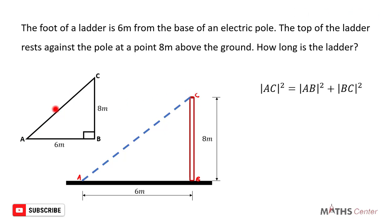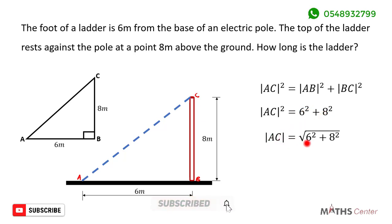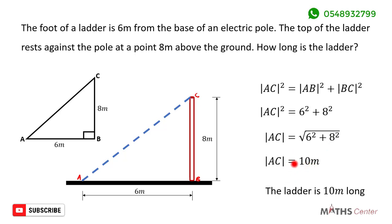So we can easily use the Pythagorean theorem to find the length of AC, which would be the hypotenuse or the longest side. Applying the Pythagorean theorem: AC squared is equal to AB squared plus BC squared. AB is 6 meters and BC is 8 meters, so AC squared equals 6 squared plus 8 squared. Therefore AC equals the square root of 6 squared plus 8 squared, which gives us 10. So the ladder is 10 meters long.